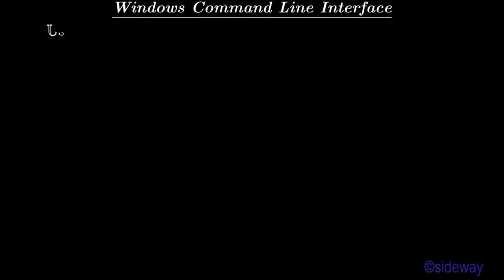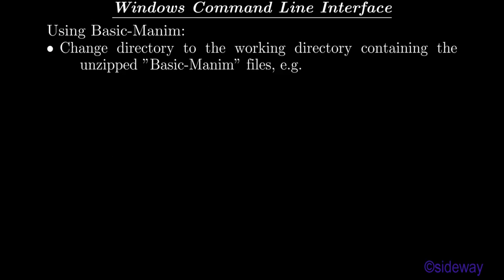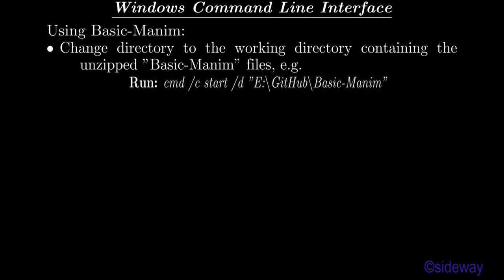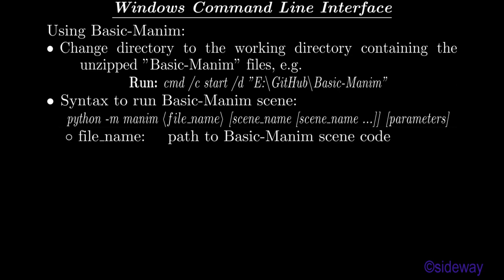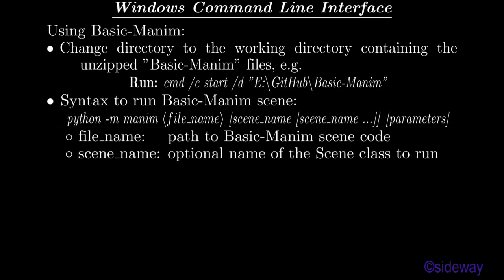Windows command line interface — using Basic Manam. Change directory to the working directory containing the unzipped Basic Manam files. Syntax to run a Basic Manam scene: python -m manam <file_name> <scene_name> <parameters>. File name is the path to the Basic Manam scene code. Scene name is the optional name of the scene class to run (default: none). Parameters are optional command flags.